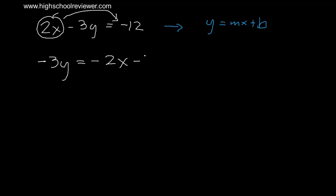Negative 12 did not move, so it remains negative 12. Now we need to remove negative 3 from the y variable so that only y remains. To remove negative 3, we divide negative 3y by negative 3. Take note: whatever is divided on one side must also be divided on the other side, so we enclose the right side in parentheses and multiply by negative 1 over 3.